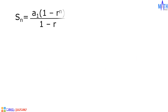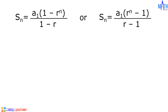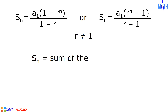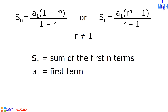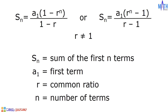To find the sum, we will be using the formula: S sub n is equal to A sub 1 times the quantity 1 minus r raised to n, all over 1 minus r; or S sub n is equal to A sub 1 times the quantity r raised to n minus 1, all over r minus 1, where r is not equal to 1. In the formula, S sub n is the sum of the first n terms, A sub 1 is the first term, r is the common ratio, and n is the number of terms.